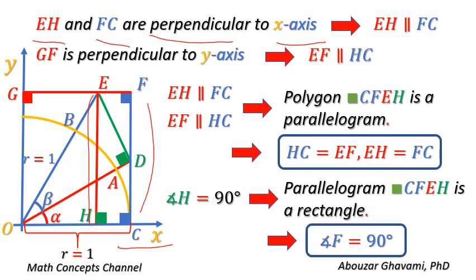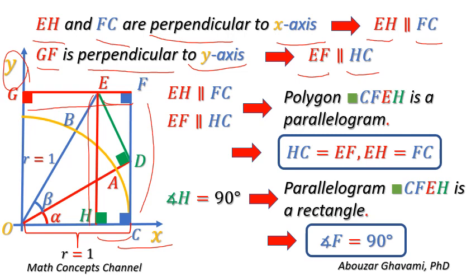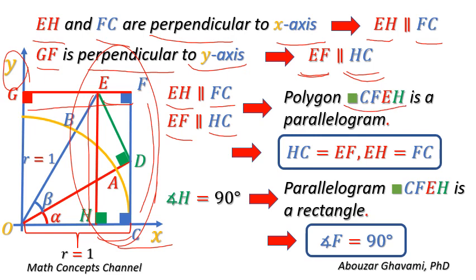Line segments EH and FC are perpendicular to the x-axis. Thus, line segment EH is parallel to line segment FC. Line segment GF is perpendicular to the y-axis. Line segment EF is part of line segment GF. Line segment HC is part of the x-axis. Thus, line segment EF is parallel to line segment HC. In polygon CFEH, side EH is parallel to side FC and side EF is parallel to side HC. Thus, polygon CFEH is a parallelogram.